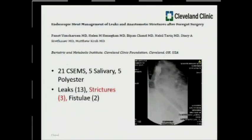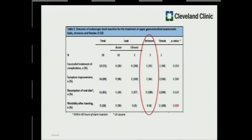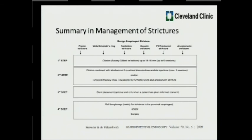In summary, here is a stepwise algorithmic approach to management of strictures across different disease etiologies. The first step is dilation — either bougie or balloon. The second step is to add incremental usage of either steroids or electroincision therapy. The third step is some form of stenting. And the fourth step — which I use very infrequently — is having patients self-dilate, which is also a potential option for patients with these types of strictures. Thank you very much.